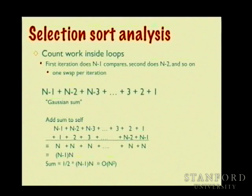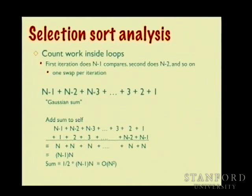Using the Gaussian sum: adding the sequence to itself in reverse causes terms to cancel, giving n minus 1 pairs each summing to n. Dividing by 2 gives one-half n squared minus n, which in Big-O reduces to O(n²). So selection sort is a quadratic sort — if it took 3 seconds for 100 elements, doubling the input makes it take 4 times as long, about 12 seconds.